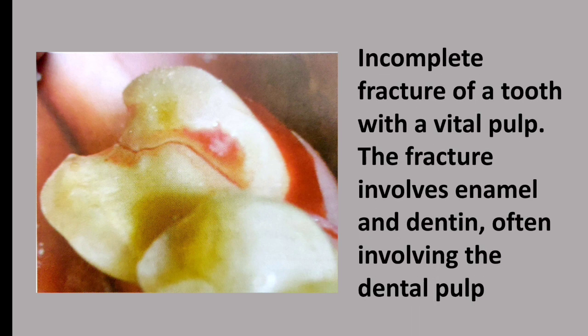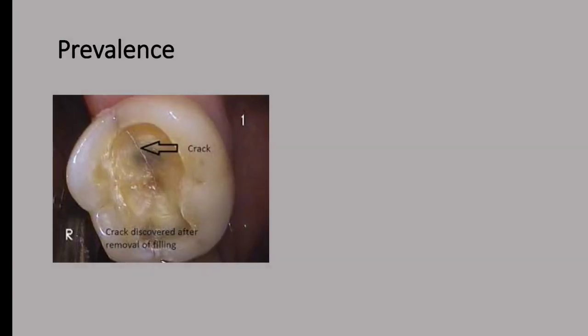Cracked Tooth Syndrome is an incomplete fracture of a tooth with a vital pulp — the pulp is still vital. The fracture involves enamel and dentine, and often involves the dental pulp when the patient presents with pain, meaning the fracture has invaded into the pulp.